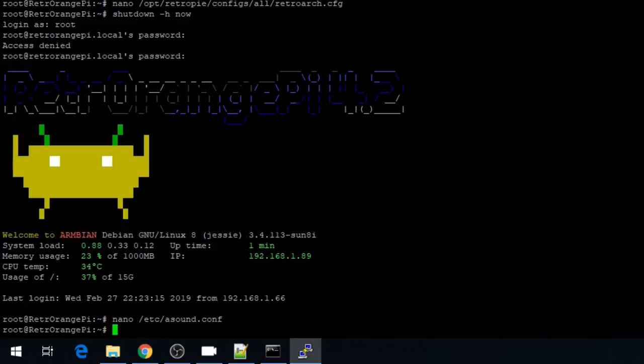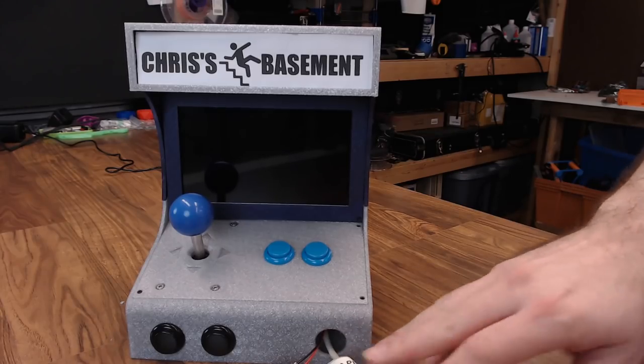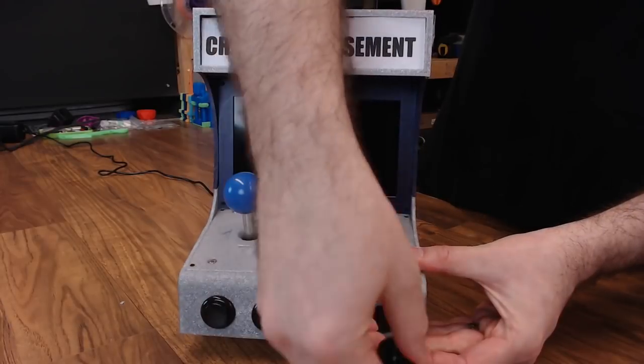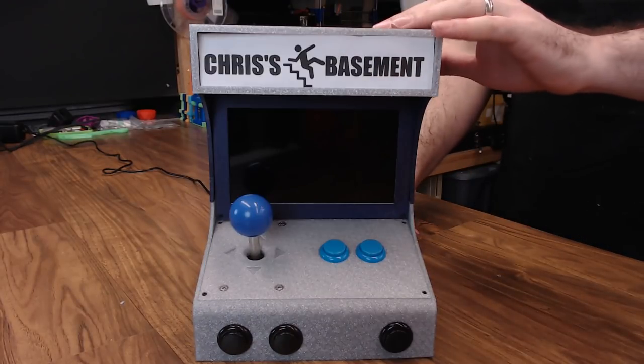And now we need to shut down and then reboot. So we need to do shutdown dash h for halt space now. We're powered off. I'm going to go ahead and pull my network cable out. We'll slide our button back in. And now when we power on, we should have audio.